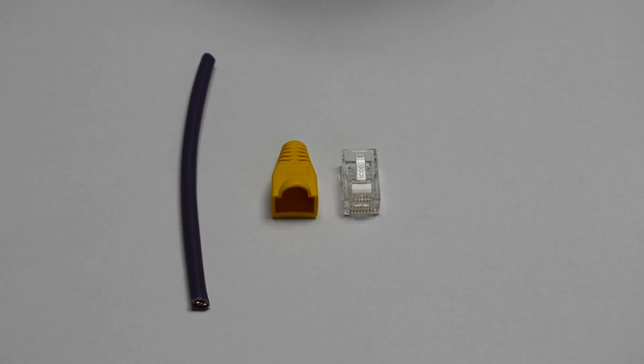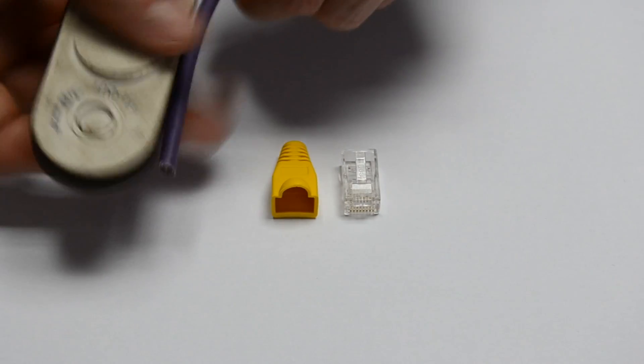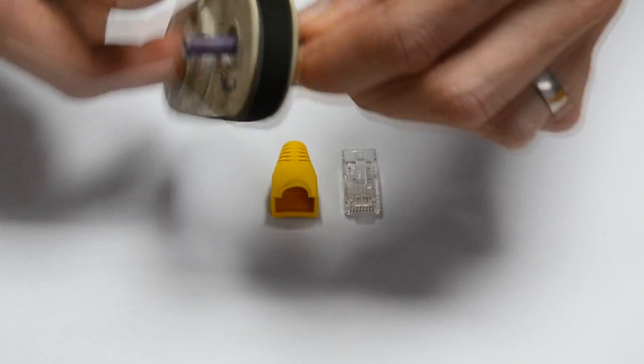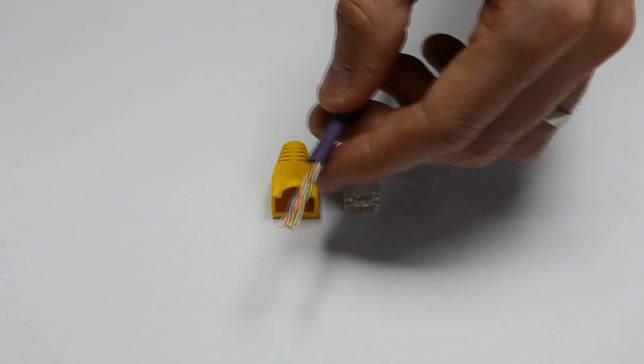So firstly what we need to do is take our cable. We've cut a short length here for the example in this video. We're going to be using our cable stripping tool which is a handy little tool that will only just strip the outer core on the RJ45, keeping your remaining eight cores intact.